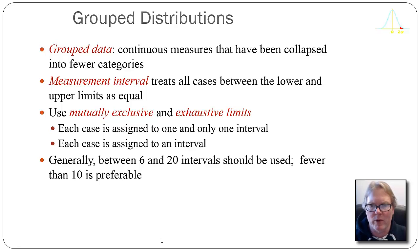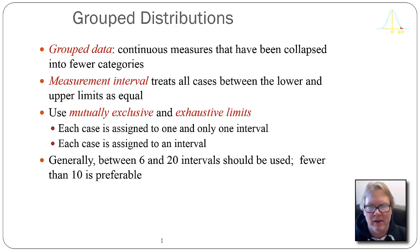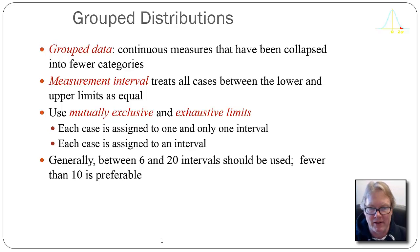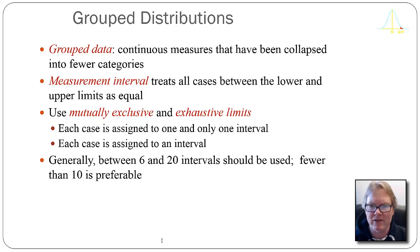The measurement interval treats all cases between the lower and upper limits as being the same. To make these intervals, we have to define them as mutually exclusive and exhaustive. Mutually exclusive means each case goes into one and only one interval. Exhaustive means there is an interval for every case. Usually, somewhere between 6 and 20 intervals tends to produce an aesthetically pleasing frequency distribution with an associated graphic that is understandable by any audience.